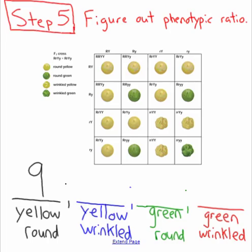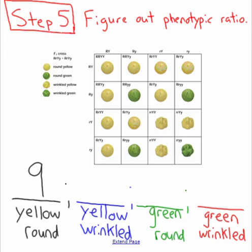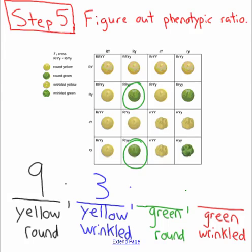Next, yellow wrinkled — you would need to see two little r's and a big Y. Counting those: yellow wrinkled, yellow wrinkled, yellow wrinkled — there are three in this dihybrid cross. Next, green round. Green is recessive, so we need to see little y, little y, and then a big R. Counting those: one, two, three green rounds.